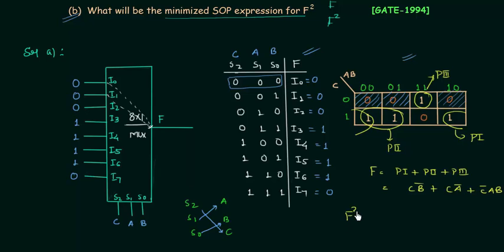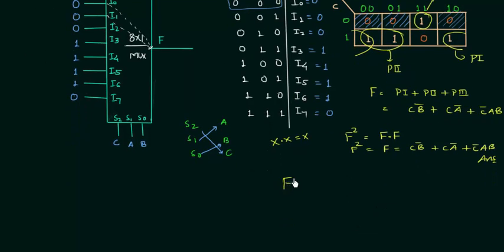Now we calculate F². F² is F AND F, and we know X AND X equals X. So F² equals F. Therefore, F² = CB' + CA' + C'AB. This is the answer. I used the laws of Boolean algebra. If we have F³, F⁴, or Fⁿ, they all equal F.